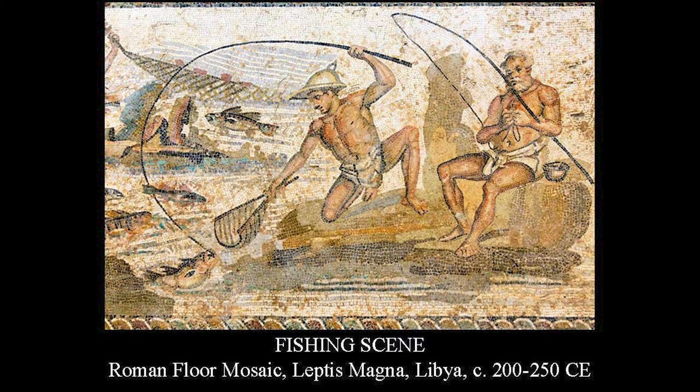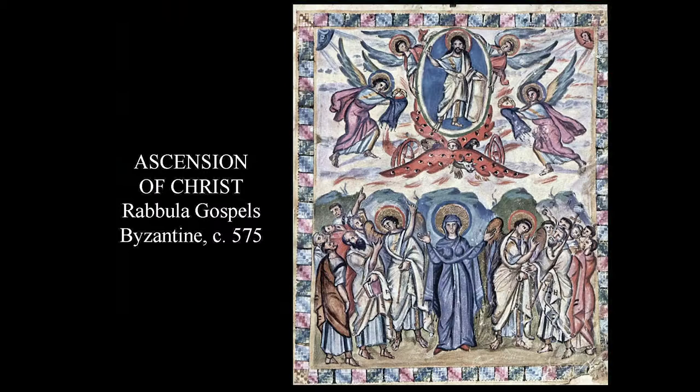Here's another Roman floor mosaic. It is a fishing scene. Again, it's just ordinary people doing everyday things that they do for a living. In this case, there are a couple of fishermen catching fish. This is from a floor of a Roman mansion in Libya, in Leptis Magna, and it was done sometime around 200 to 250 AD.